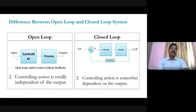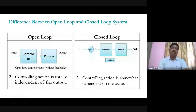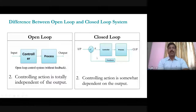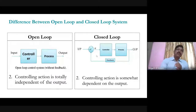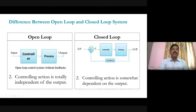Now let's see the one-to-one differences between open-loop and closed-loop control systems. First difference: the block diagram. In an open-loop system, there are only two blocks — controller and plant. In a closed-loop system, a comparator and a feedback element are added, and the output is fed back to the input. Second difference: in an open-loop system, the controlling action is totally independent of the output, whereas in a closed-loop system, the controlling action depends on the output.